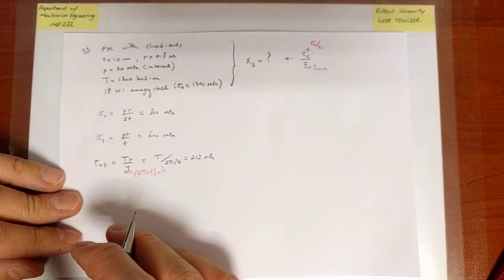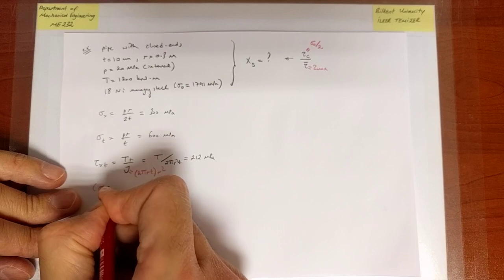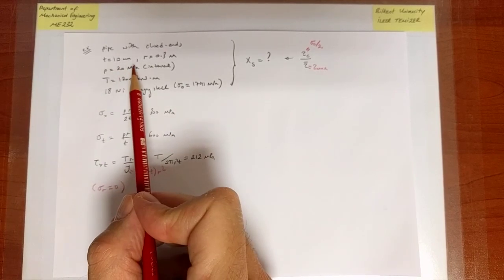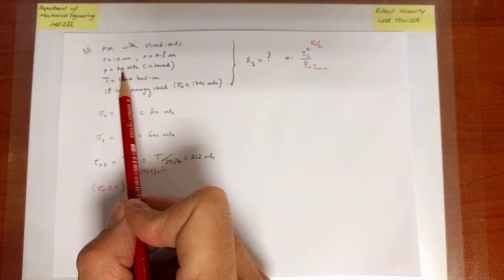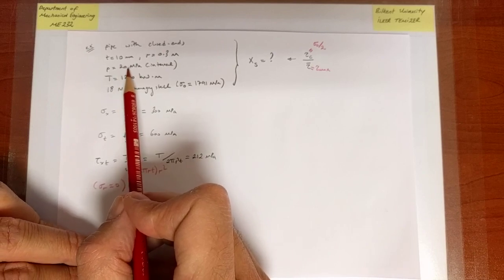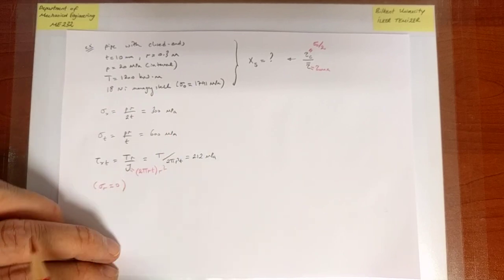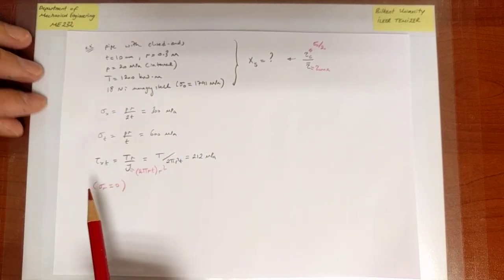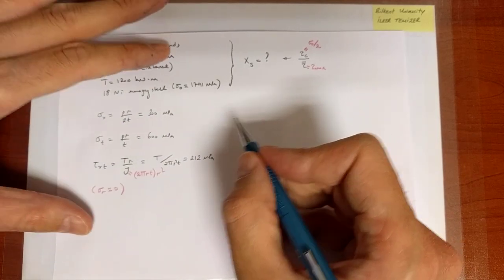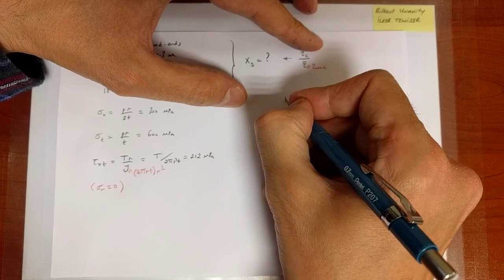I'm going to make the assumption that sigma_r is zero. Sigma_r is not exactly zero — on the outside it's zero, and on the inside it equals minus 20 MPa. It will have some effect on the safety factor, but 20 MPa is very small compared to the other values, so that effect is negligible. I go ahead and find the principal stresses from which I can find the absolute maximum shear stress.